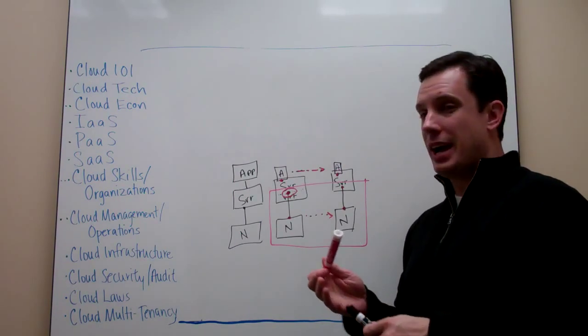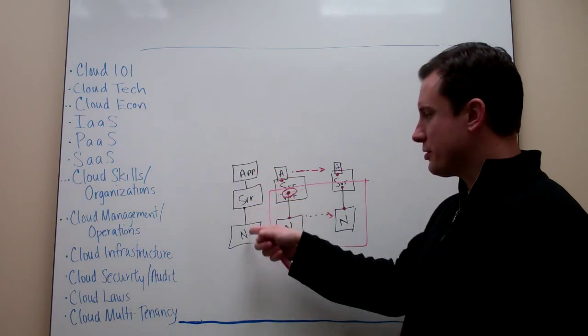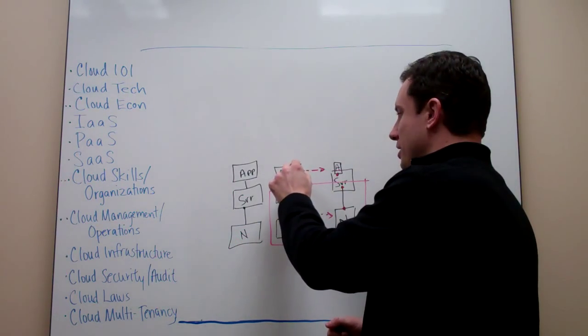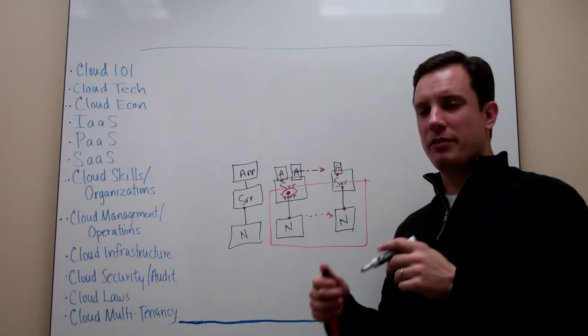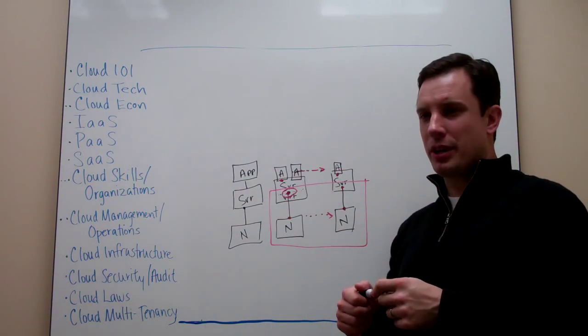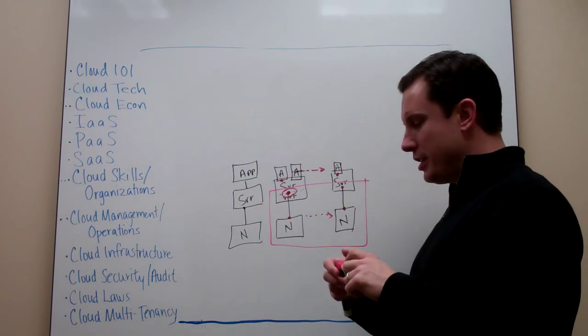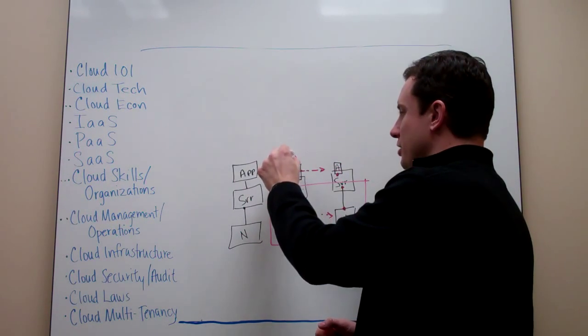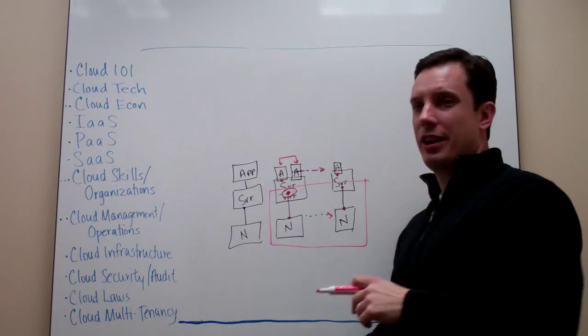The next thing that we have is we used to have sort of single application against the server. Now we have multiple applications living on a server, right? We virtualize those applications or that operating system, and we get into a situation where how do we validate, how do we make sure this application isn't doing bad things to that application?